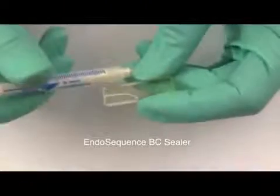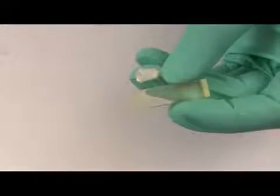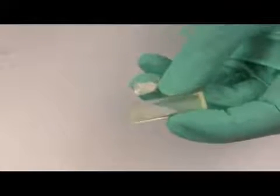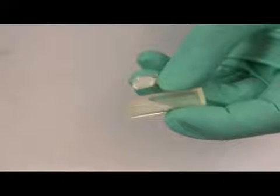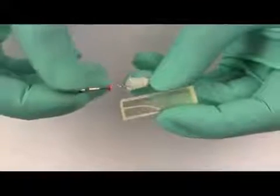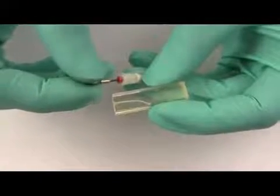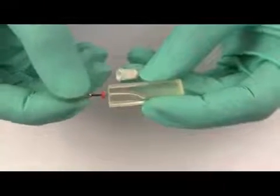To deliver the sealer into the canal, I'm going to coat the flutes with the last rotary file used and deliver that down to the apex. Then slowly twist it in a counterclockwise fashion to sufficiently coat the entire canal. You could also use a small hand file or even a gutta-percha point, simply trying to deliver the sealer along the canal walls.